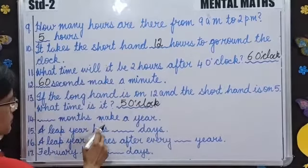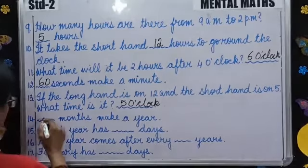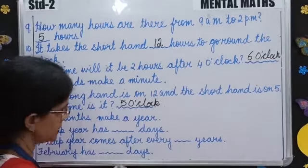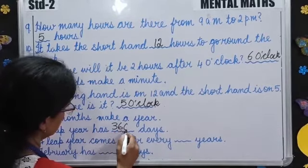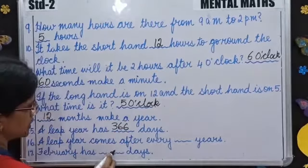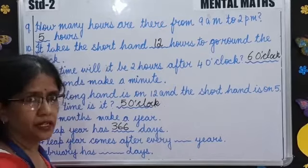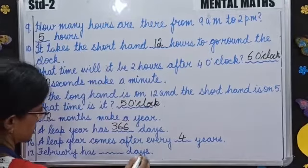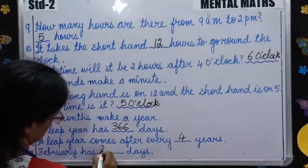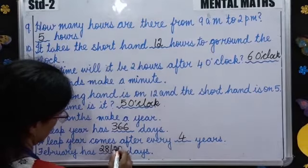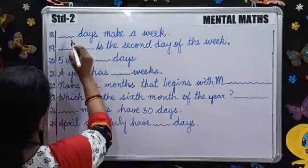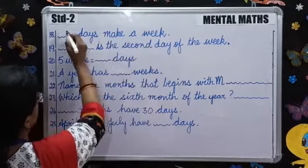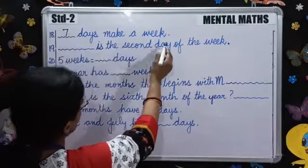How many months make a year, children? 12 months. A leap year has how many days? A leap year has 366 days. A leap year comes after every 4 years. February has 28 or 29 days. How many days make a week? 7 days make a week.